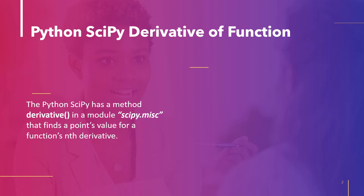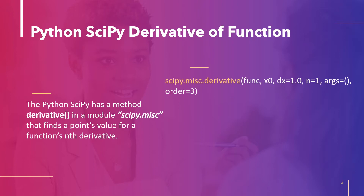The method `derivative` of the Python SciPy `scipy.misc` module determines a point's value for a function's nth derivative. The syntax is `scipy.misc.deriv`, where the parameters are: `func` — the input function; `x0` — the point where the nth derivative is evaluated; `dx` — the spacing; `n` — the derivative order (default is 1); and `args` — used to provide extra arguments to the method.